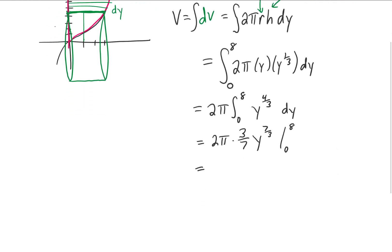Let's see, we can simplify this a bit. We get 6π/7. Plugging in our upper limit of integration is going to give us eight to the 7/3 power, minus zero to the 7/3 power. Eight to the 7/3.